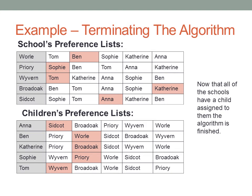Now that all the schools are matched to a student, we have finished the algorithm. You can see from the tables that there is no student which prefers a different school such that that school would also prefer them. For example, Ben is assigned Well but prefers Priory; however, Priory is assigned Sophie and does not prefer Ben. This also works the other way — Well is assigned Ben but prefers Tom; however, Tom is assigned to Wyvern and does not prefer Well. As there are no such cases, this is a stable match.